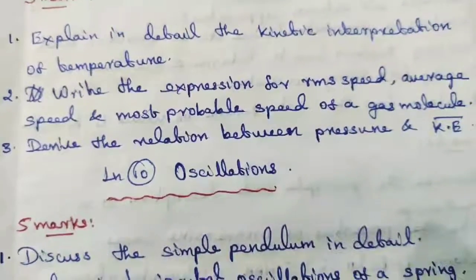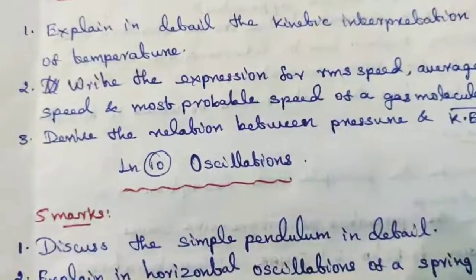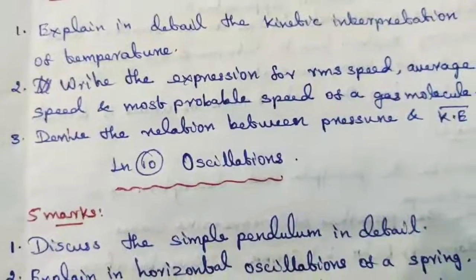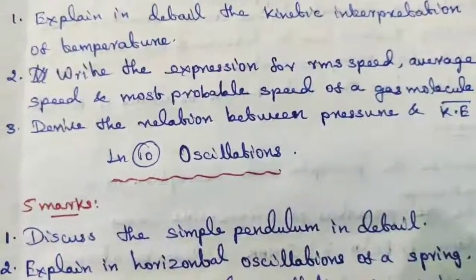Write the expression for RMS speed, average speed and most probable speed of a gas molecule. Derive the relation between pressure and mean kinetic energy. Lesson 10, oscillations.